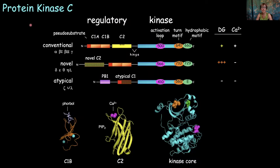Protein kinase C is a family of enzymes with three subclasses. The conventional PKCs are regulated by both diacylglycerol and calcium — these are the ones I'll focus on primarily. The novel PKCs are regulated only by diacylglycerol. The atypical PKCs are regulated by neither second messenger; rather, they have a PB1 protein-protein interaction module that allows them to bind protein scaffolds, which then activates them.